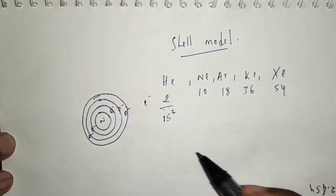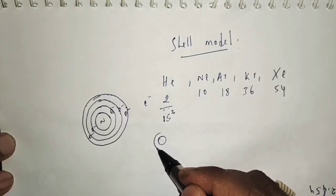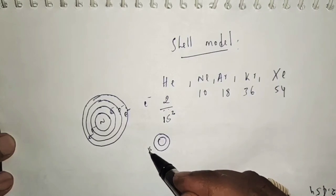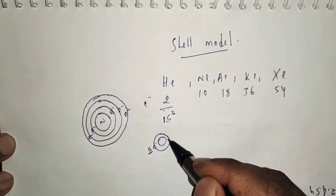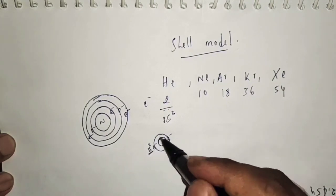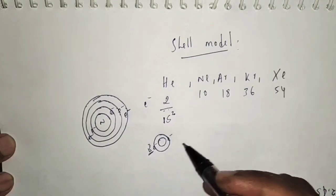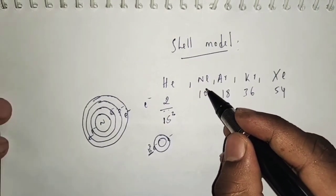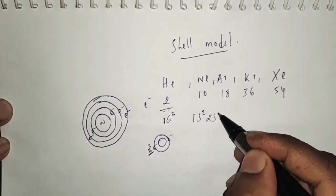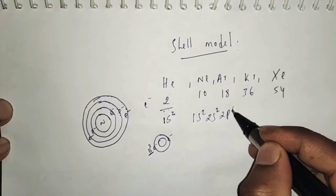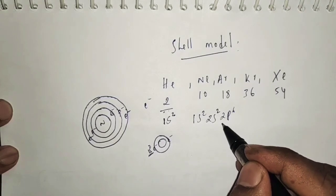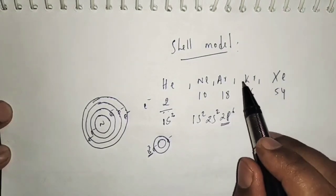For example, the electronic configuration of helium is 1s², where the first s-shell has two electrons and is completely filled, making it highly stable. Similarly, for neon its electronic configuration is 1s² 2s² 2p⁶, meaning all shells are completely filled with electrons, making it a more stable atom.